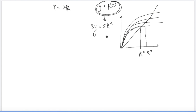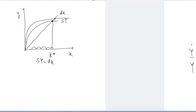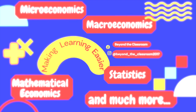When alpha becomes equal to 1, that is basically the limiting case where savings will be linear. That is the case where there will never be an equilibrium between the savings and depreciation curves, which is what we understand in the AK model.